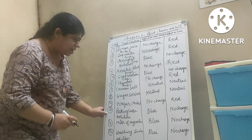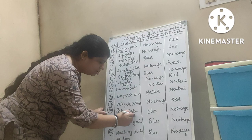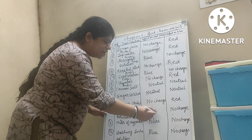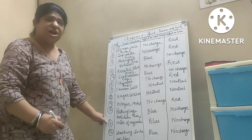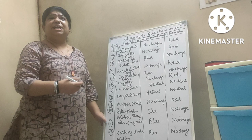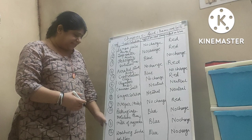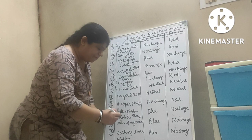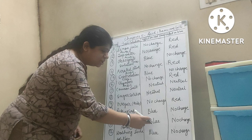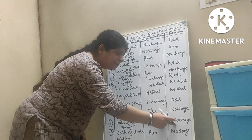Baking soda solution — as you know, this is also basic in nature. So red litmus paper will turn into blue and blue — no change. Milk of Magnesia: what is milk of Magnesia? It is used when you feel acidic — it is given as a medicine for acidity. We all know that it is basic in nature, so this will turn the red litmus paper into blue and in blue litmus paper no change.